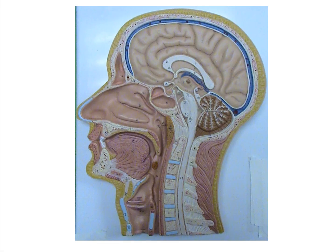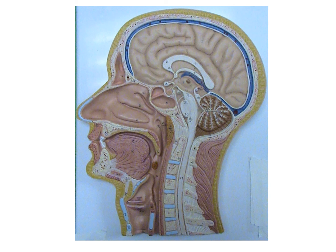Let's now identify all the structures we can on this sagittal head model. Here we have the labia and the oral cavity, the tongue, hard palate, soft palate including the uvula, the palatine tonsils, and the lingual tonsil. Here is our pharynx stretching from the posterior end of the nasal cavity all the way down — the laryngopharynx is posterior to the larynx, the oropharynx is posterior to the oral cavity, and then this would be the esophagus. Note that you will not be asked to identify the salivary glands on this model.